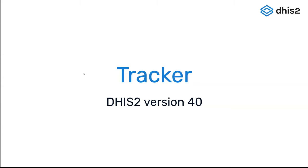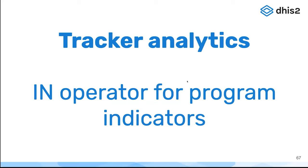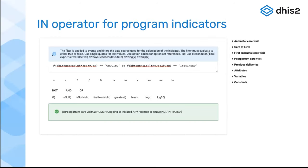Before I get into any of that, I will show you two new Tracker Analytics features. The first one is a new operator for program indicators — an 'in' operator. We are all used to writing program indicators like this: we might have a data element with several options. In this case, I'm using the data element for an ongoing or initiated ARV regimen, and I want to count everyone with either an ongoing or recently initiated ARV regimen. With only two options this doesn't take much space, but in some cases you might have 10 or maybe 100 options to filter, and your expression might become very long.